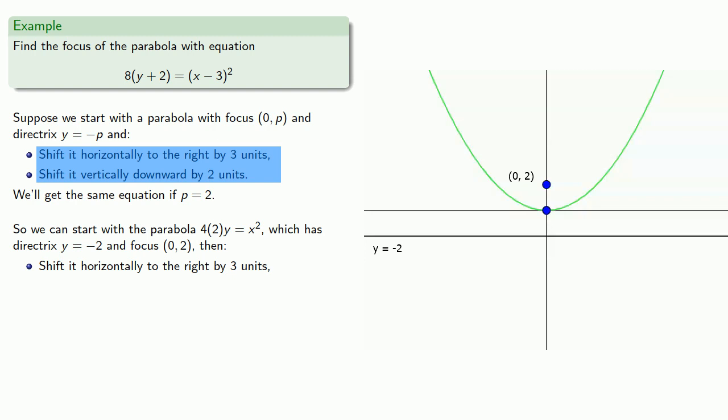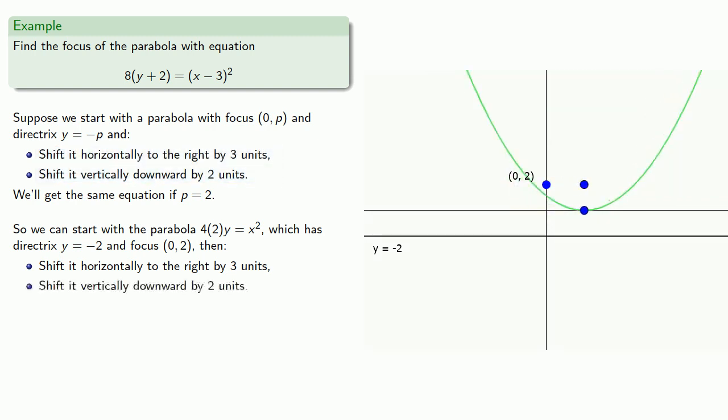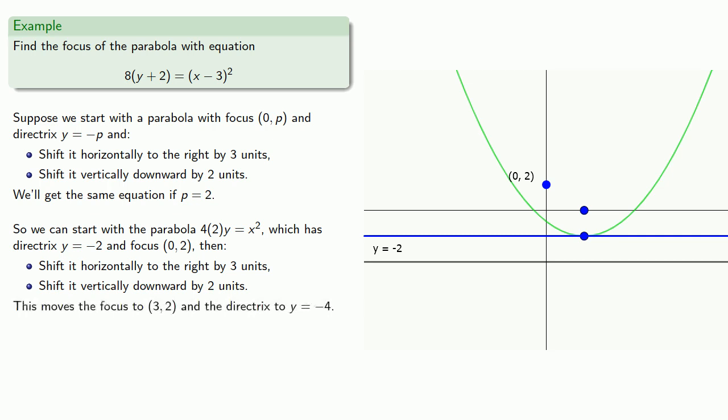We shift this parabola horizontally to the right by 3 units, then shift it vertically downward by 2 units. And this will move our focus to (3, 2) and the directrix to y equals negative 4.